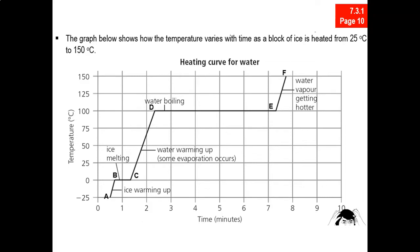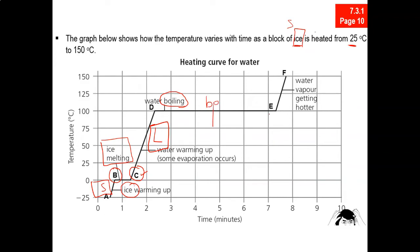Let's look at this graph in your notes. We are given a block of ice — a solid — heated starting from negative 25 degrees Celsius. At the start I'm given ice, which is a solid. Melting occurs from B to C, and at C we will only have liquid. C to D is liquid only. From D to E there is a process — boiling — the boiling point. Boiling starts at D and finishes at point E. From E to F there is only the gaseous state because all the liquid has been converted to a gas.